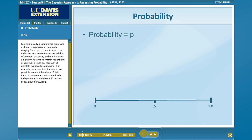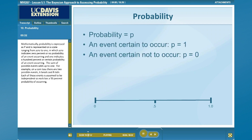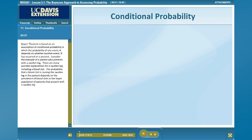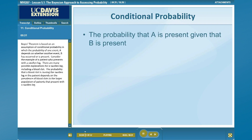Mathematically, probability is expressed as p and is represented on a scale ranging from 0 to 1, in which 0 indicates 0% or no probability of an event occurring and 1 indicates 100% or certain probability of an event occurring. The sum of possible events adds up to 1. For example, in a coin toss there are two possible events — A, heads, and B, tails. Each of these events is assumed to be independent, so each has a 50% probability of occurring. Bayes' theorem is based on an assumption of conditional probability, in which the probability of one event, A, depends on whether another event, B, has occurred or is present.